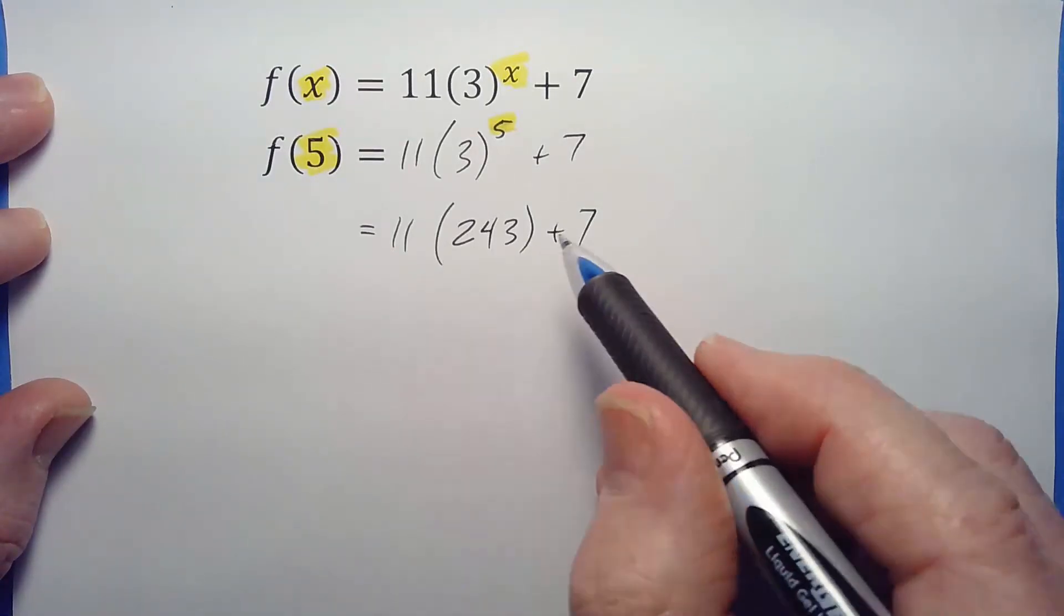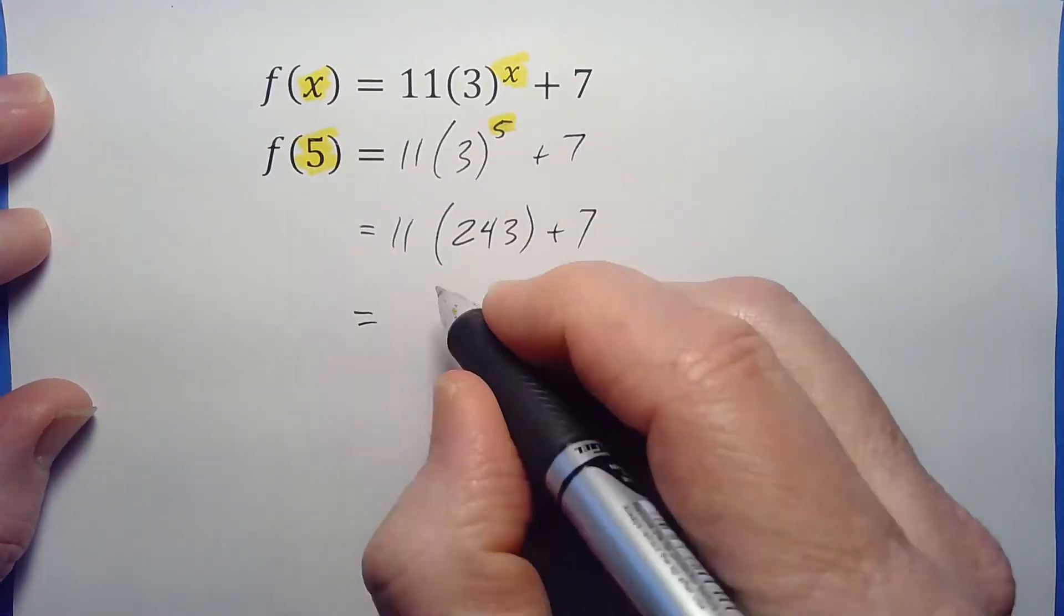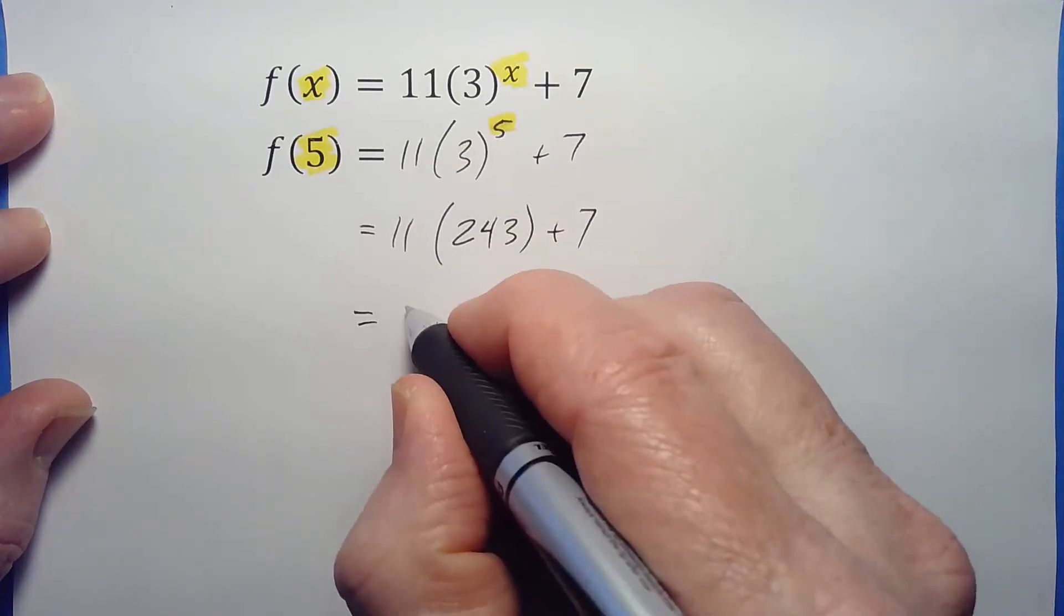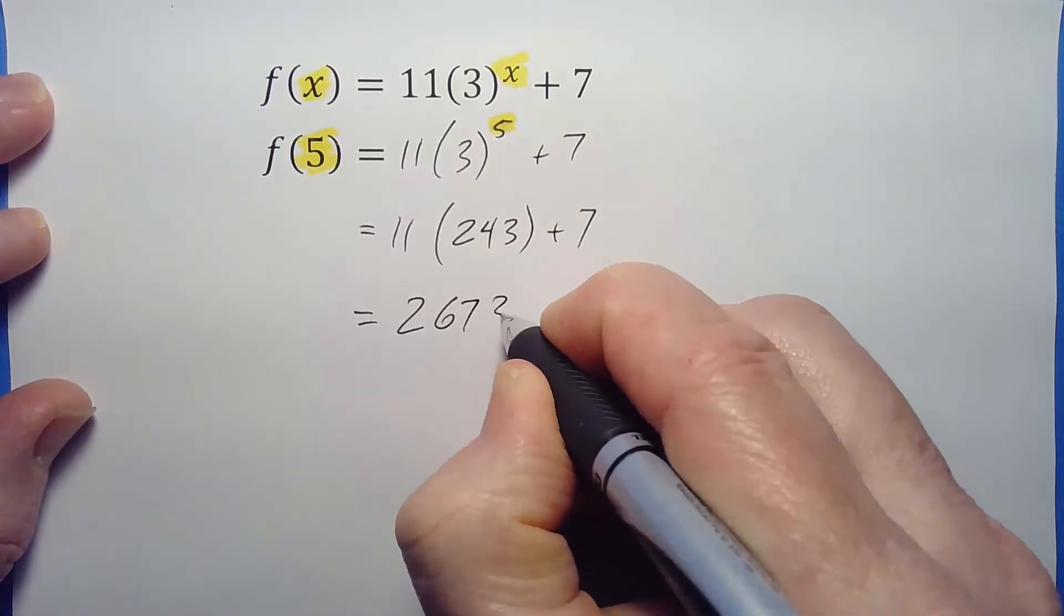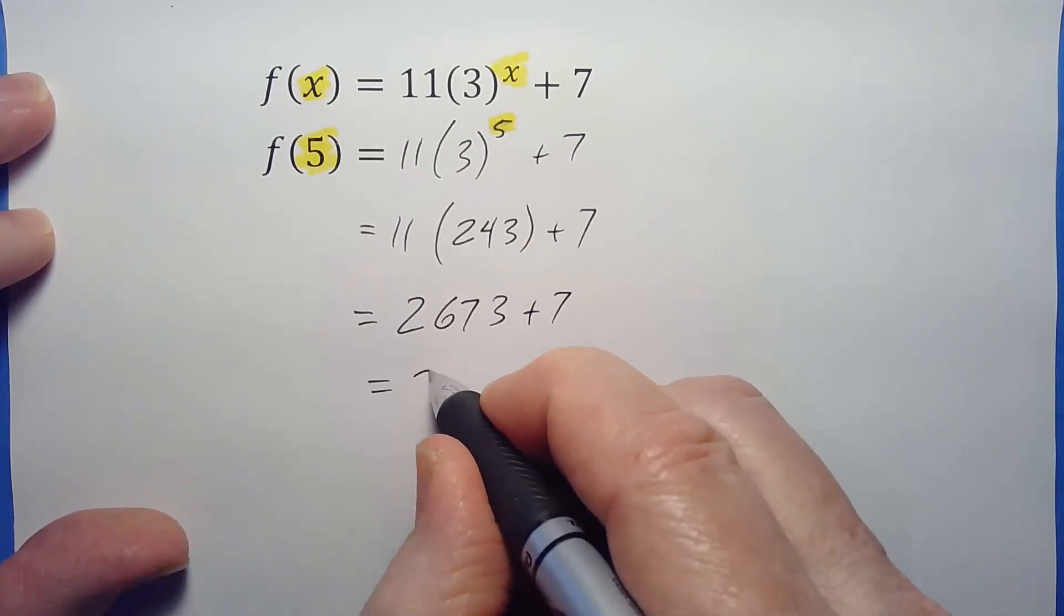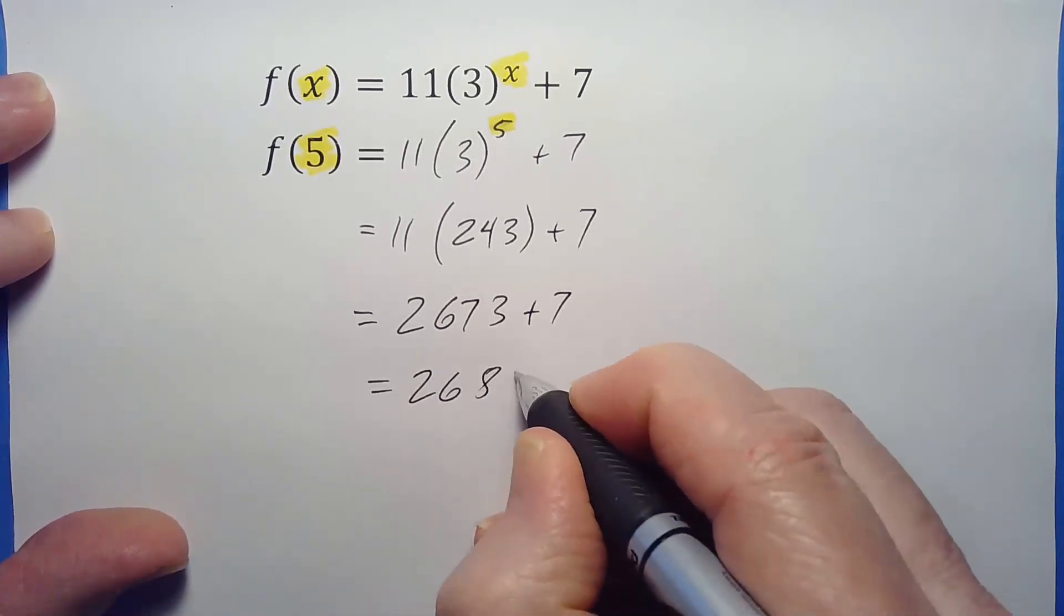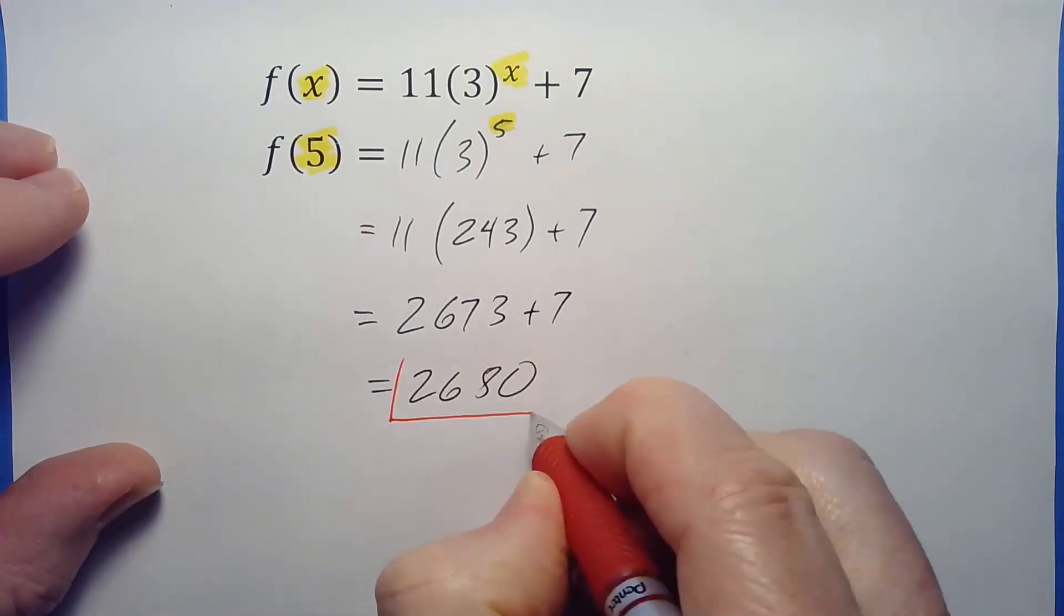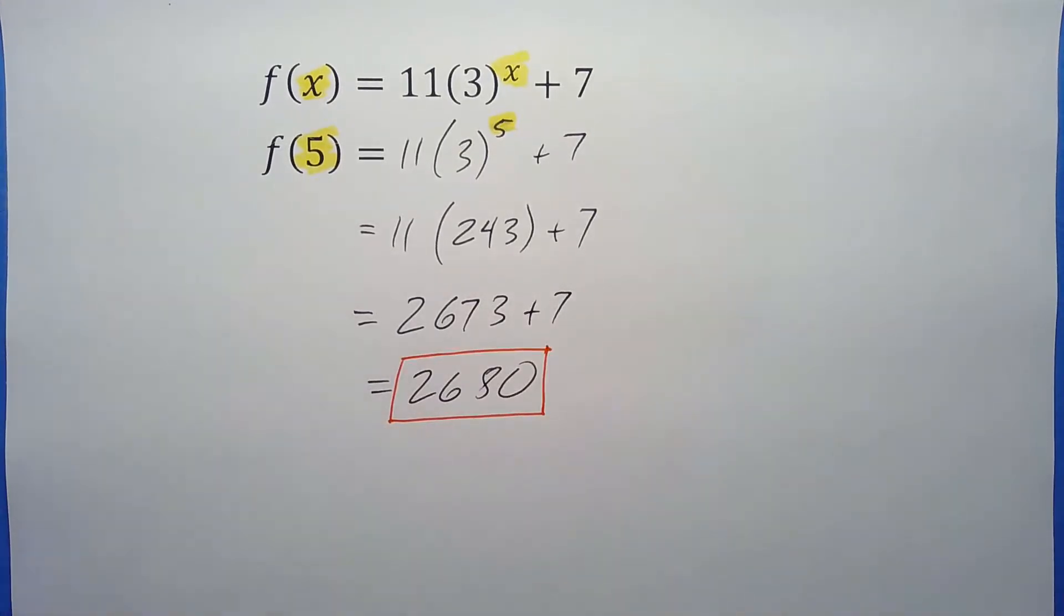Remember order of operations—we multiply before we add. So we multiply this out: 11 times 243 equals 2,673 plus 7. We add them up and get 2,680. There's our answer.